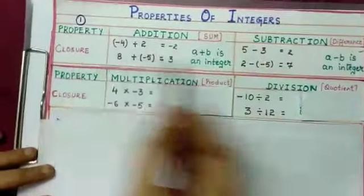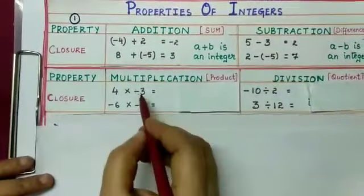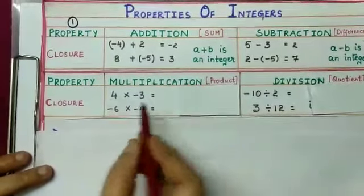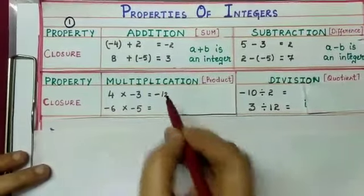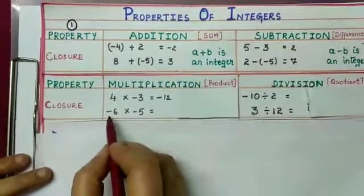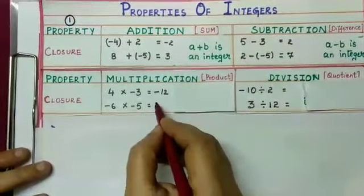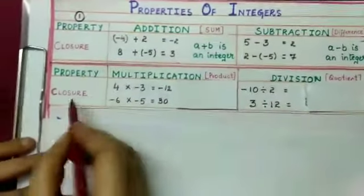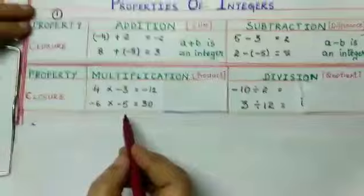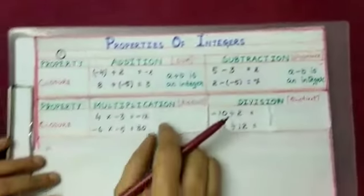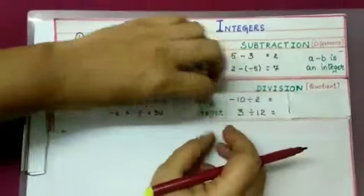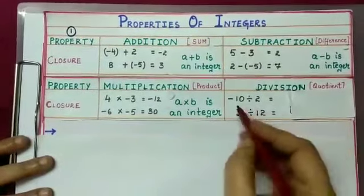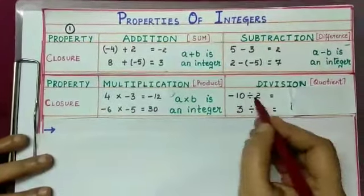Now let us check closure under multiplication: 4 into minus 3 — minus times minus gives plus, 4 threes are 12, so the result is minus 12; minus 6 into minus 5 — minus times minus is plus, 6 fives are 30. The product of two integers is also an integer, so integers are closed under multiplication. For any two integers a and b, a into b is also an integer.